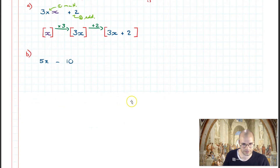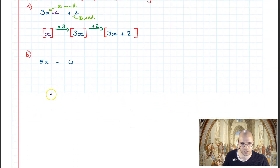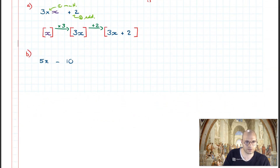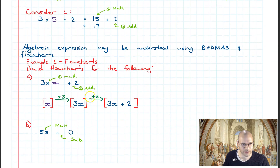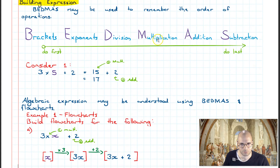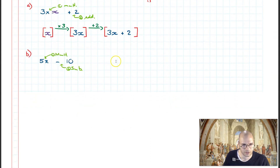Moving along, the next example is 5z minus 10. Using the same understanding, we're going to turn this algebraic expression into a flowchart. We have 5z which means 5 times z, so we've got a multiplication and a subtraction. Referring to BEDMAS, multiplication comes before subtraction — so multiplication is first, subtraction second.